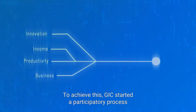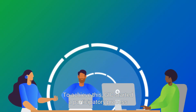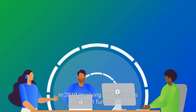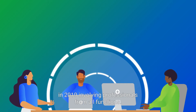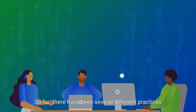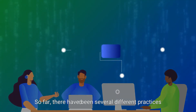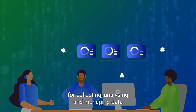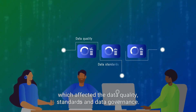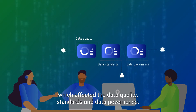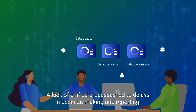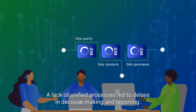To achieve this, GIC started a participatory process in 2019 involving professionals from all functions. So far, there had been several different practices for collecting, analyzing and managing data, which affected the data quality, standards and data governance. A lack of unified processes led to delays in decision making and reporting.